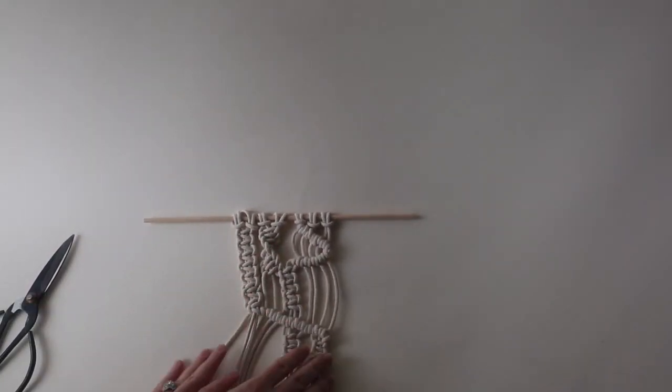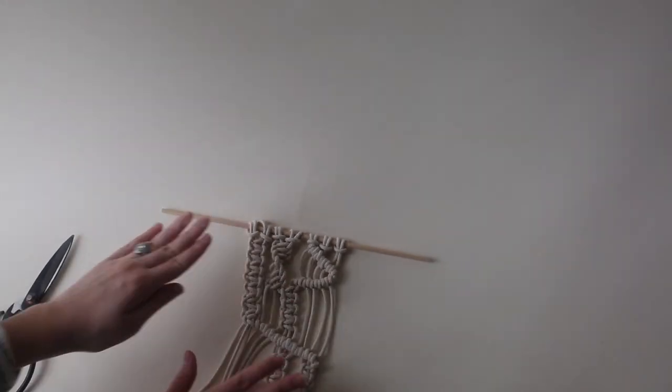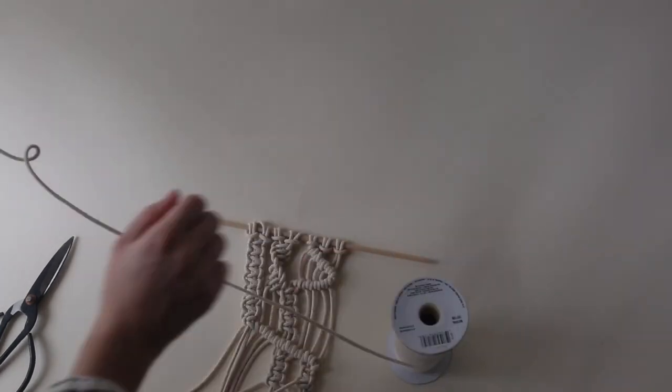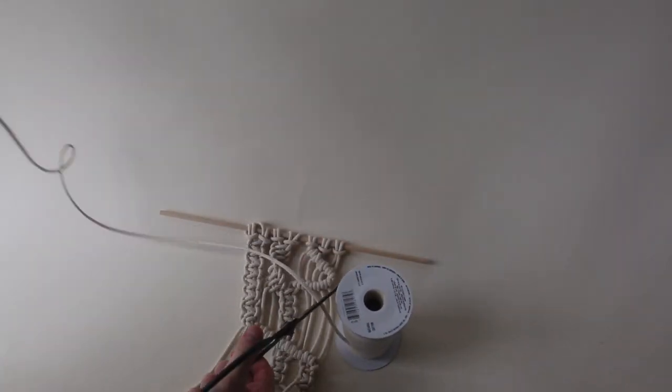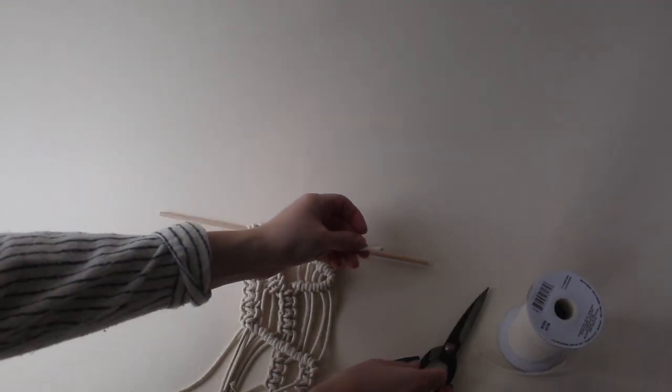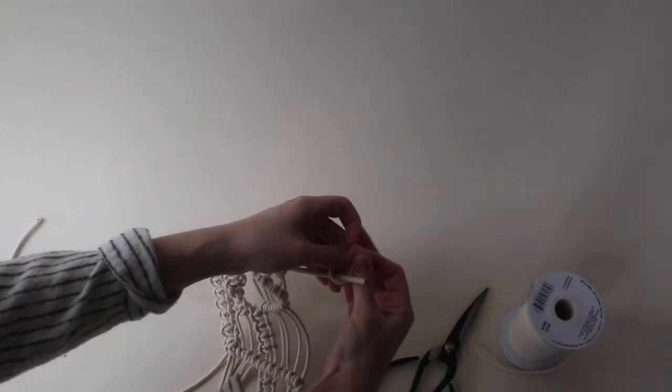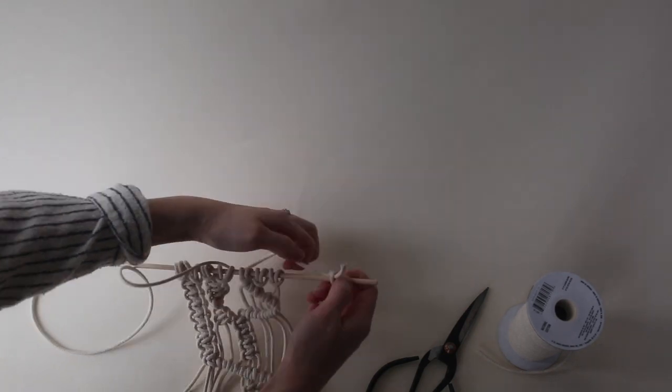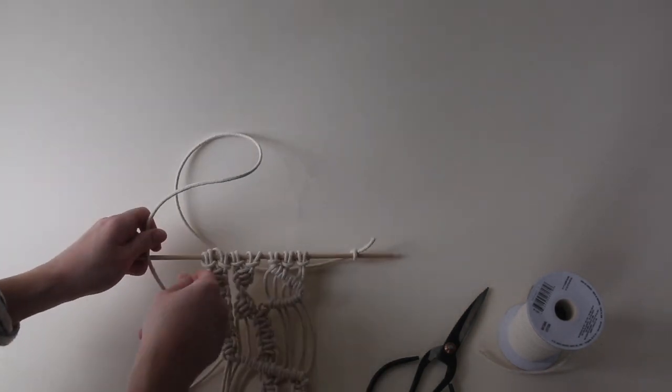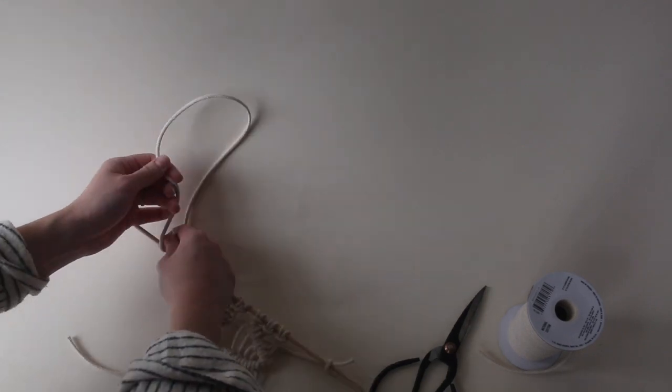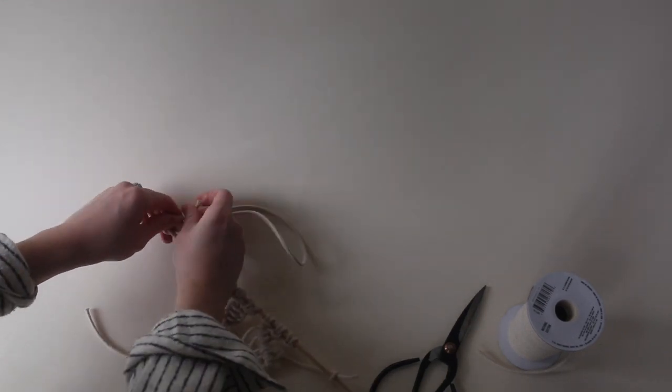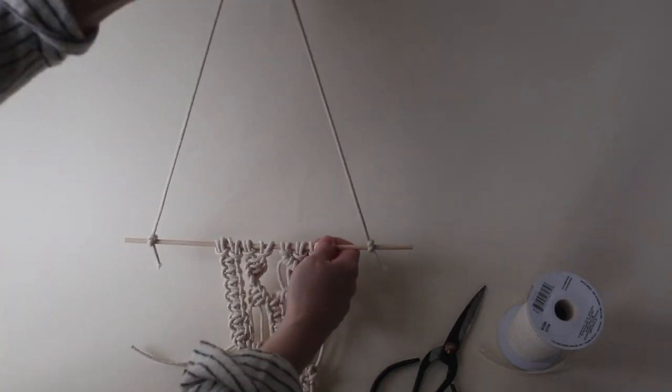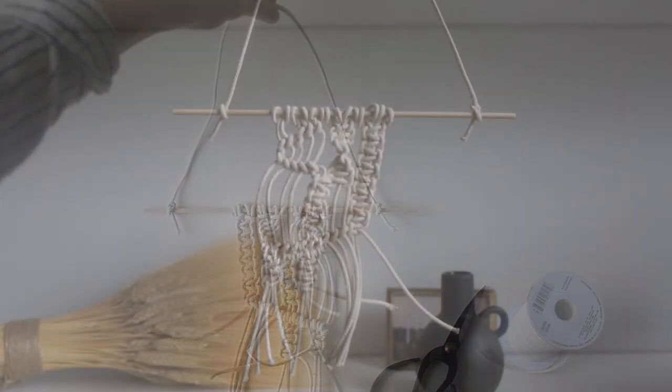You can just pull them down so they hang straight for you. Now to display your macrame, just take some macrame cord and we're going to tie it off on either end of our dowel. And your macrame is ready to be displayed. Thank you so much for watching guys. I hope you have a lot of fun with this project.